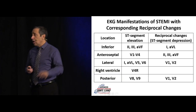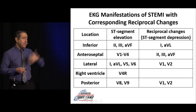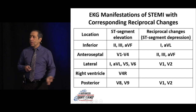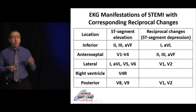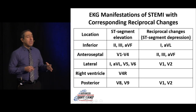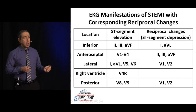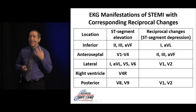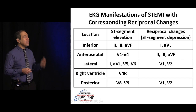It's good to know where reciprocal changes are, but the easier way to remember is: if there is elevation, look for depression somewhere else. For inferior myocardial infarctions, reciprocal changes are very common, especially when involving the right coronary artery. The reciprocal change of inferior MI typically involves leads 3 and AVL. However, remember that 20% of the time with anterior myocardial infarction, you will not have reciprocal changes, so their absence with anterior MI is not unusual.